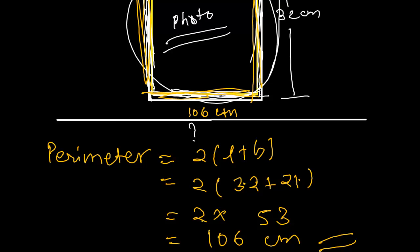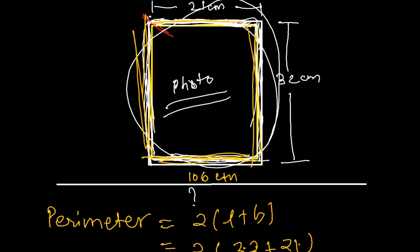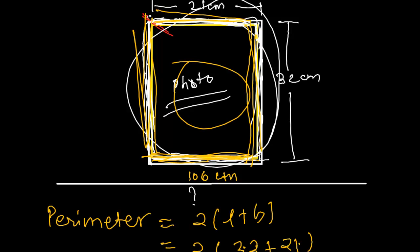So the length of the wooden strip we need is 106 centimeter — a lengthy wooden strip. Then we can easily make all these sides of the wooden frame and we can easily insert our photograph inside that. So the wooden strip's length should be 106 centimeter, and that is our perimeter.